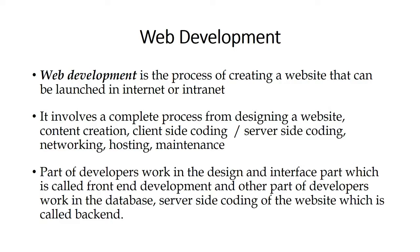For example, take a website where we need to log in to book train tickets. In that website we have two controls: a text box control where we enter user ID and password, and a submit button control where we submit that data. The controls which the user sees and interacts with are called front-end development — these are designed and developed using HTML.